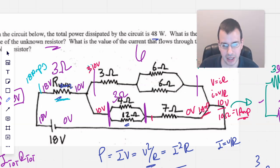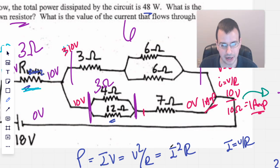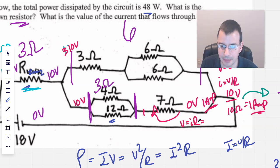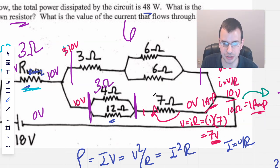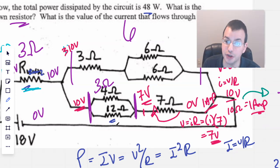Now if we know 1 amp, we can find the voltage rise going this direction. V equals IR. Amp is 1, R is 7, so 1 times 7 will be 7 volts. We have a 7-volt rise here, so we have 0 volts to 7 volts. Now we have 10 volts here, 7 volts here, both on each side of the 12-ohm resistor.